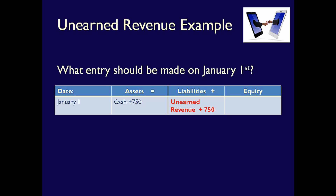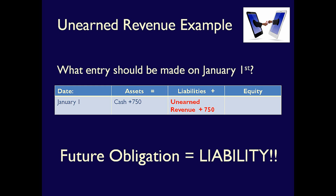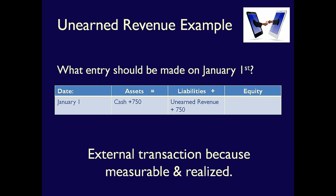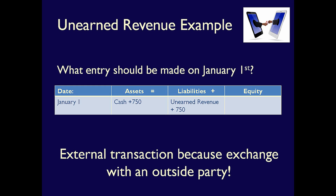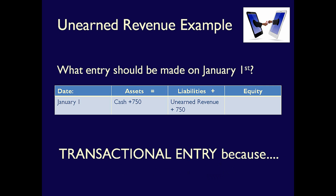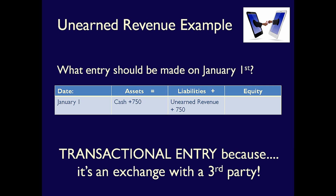This is because the company has an obligation to the customer in the future to provide a service. What kind of transaction is this? It's an external transaction because it's measurable and realized. Realized means that it happened in the past. It's external because we exchanged something with an outside party. External transactions are called transactional entries, indicating the transaction occurred with a third party, and there's likely a paper trail, such as an invoice or receipt.